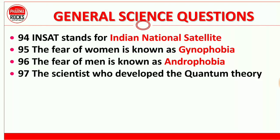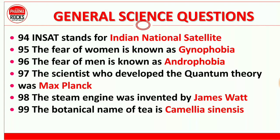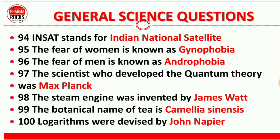Question 97: The scientist who developed the quantum theory was Max Planck — Max Planck ne quantum theory develop ki thi. Question 98: The steam engine was invented by James Watt. Question 99: The botanical name of tea is Camellia sinensis. Question 100: Logarithms were devised by John Napier.